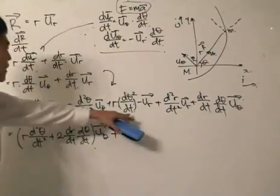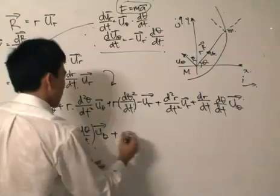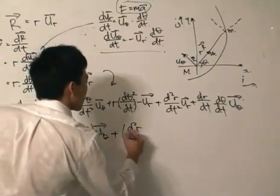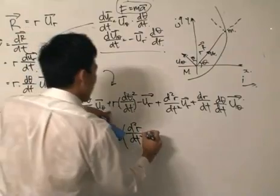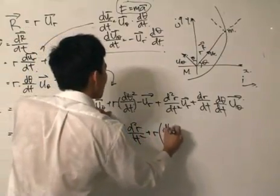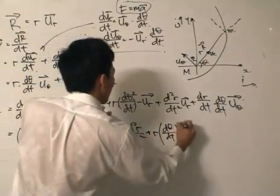And then likewise, I'm now going to group the U_R together. So what we got, we got d²R/dt² and then we will have to add up with R dθ/dt squared.